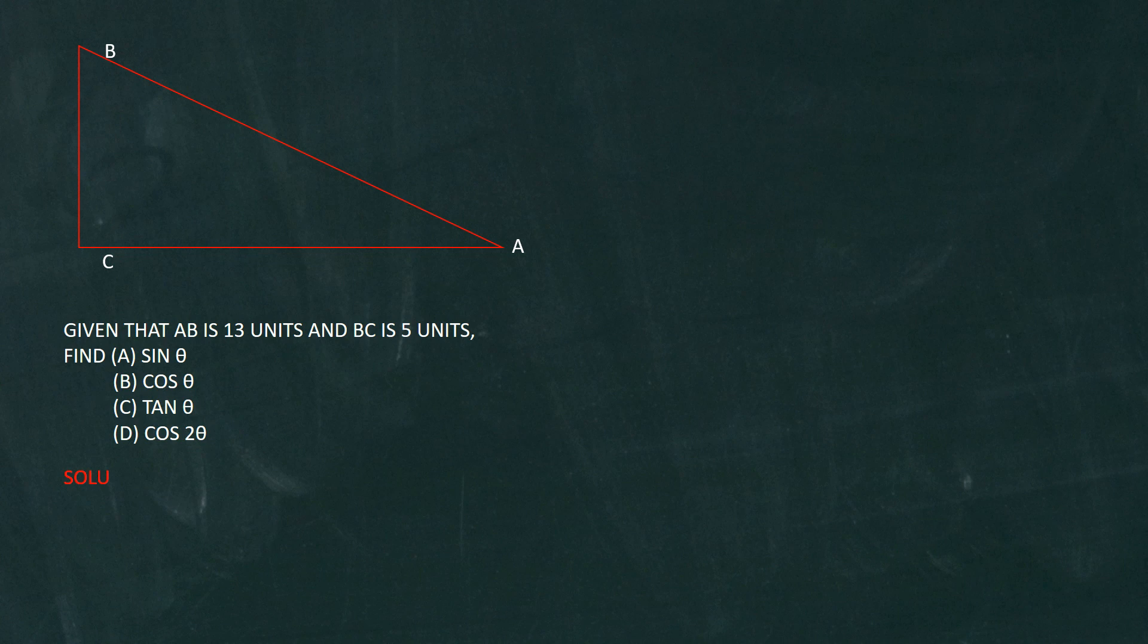You'll notice on the triangle that theta is located right at point A. Now with regards to the angle theta, the adjacent will be the side AC, the opposite will be the side BC, and the longer side AB is called the hypotenuse. All that is with respect to angle theta.